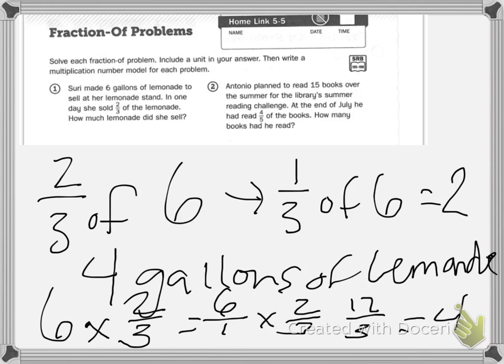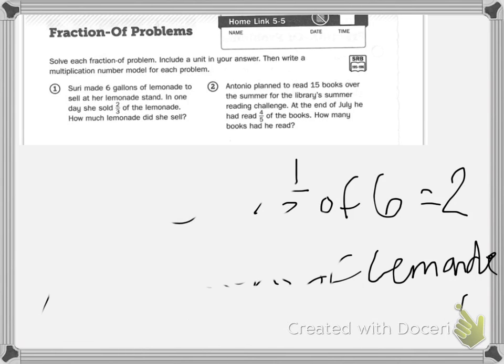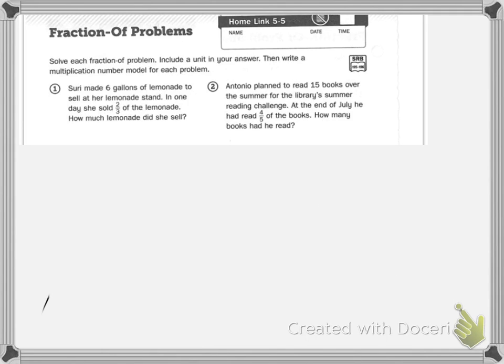Now let's look at number two. Number two says Antonio planned to read 15 books over the summer for the library summer challenge. At the end of July he had read four-fifths of the books. How many books had he read?